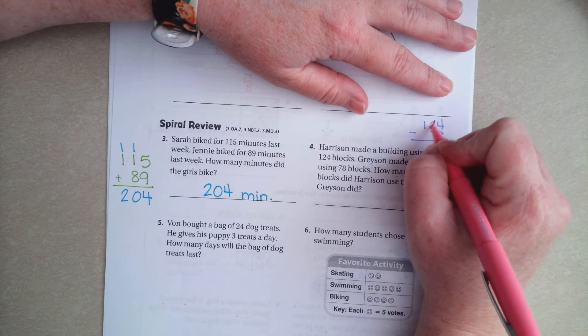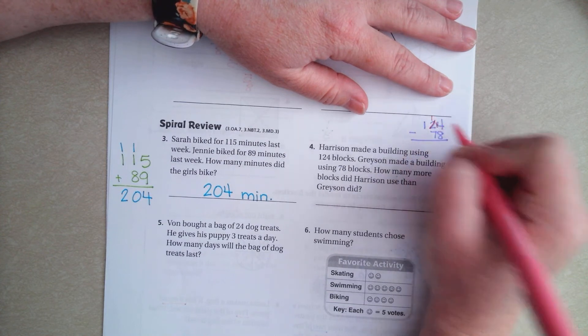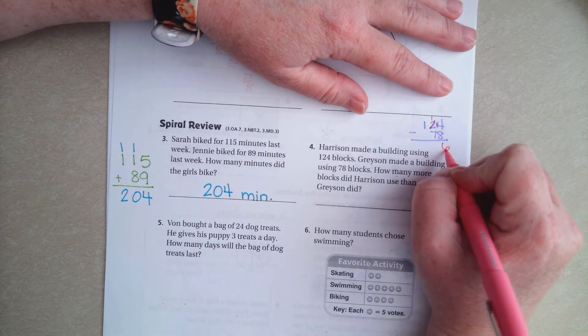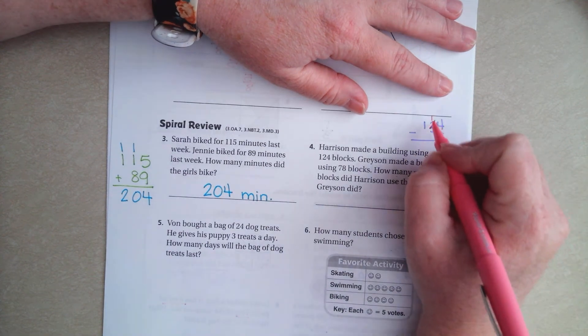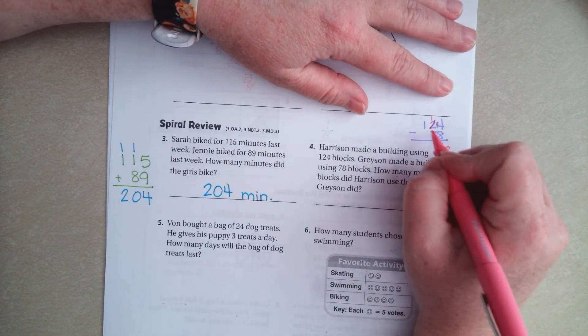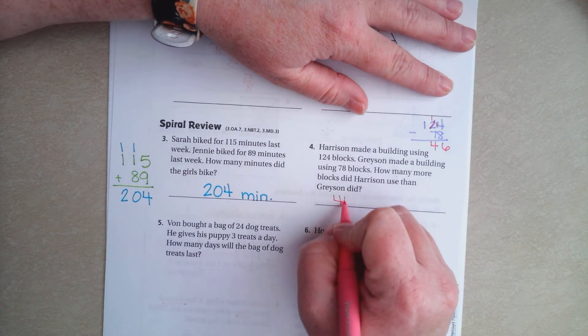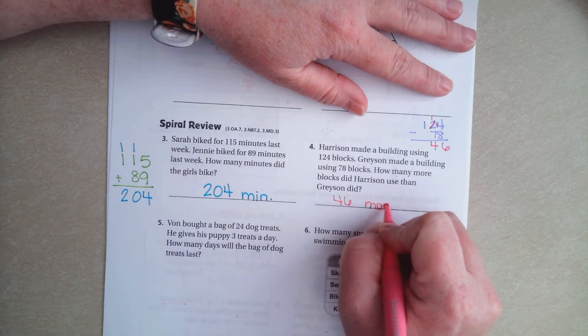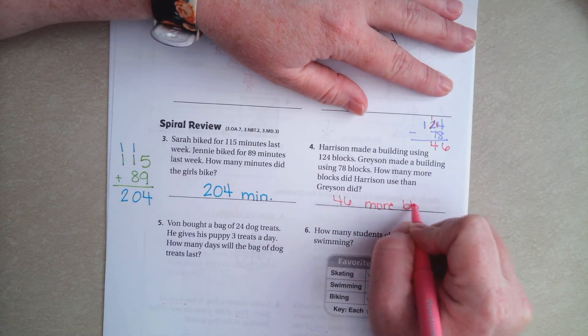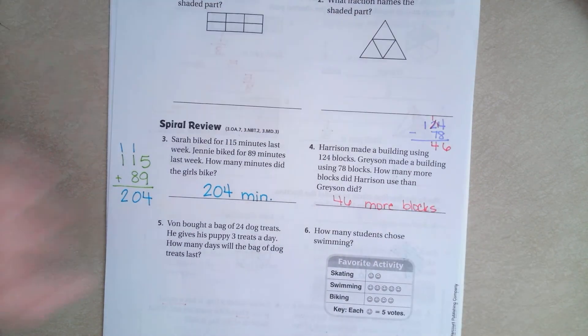Well, 4 can't take away 8. So, I'm going to go next door and make it a 1. That makes it 14. 14 take away 8 is 6. 1 can't take away 7, but this 11 can. So, 11 take away 7 is 4. 46 more blocks.